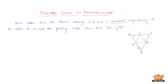The line drawn through A is parallel to BC, the line drawn through B is parallel to AC, and the line drawn through C is parallel to AB. When you draw lines parallel to the other sides of the triangle, we get another bigger triangle PQR.